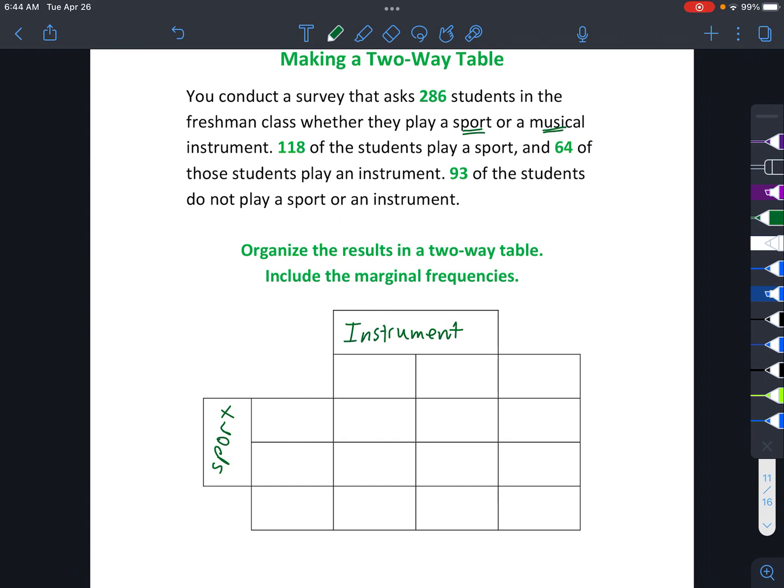And whether they play a sport. And sometimes those things can overlap, right? It doesn't necessarily mean that you do one or the other. So their answers are either going to be yes or no. So put yes or no to playing an instrument. And yes or no to playing a sport.